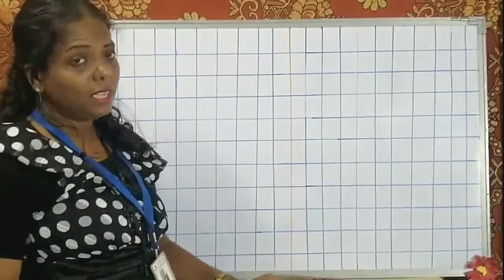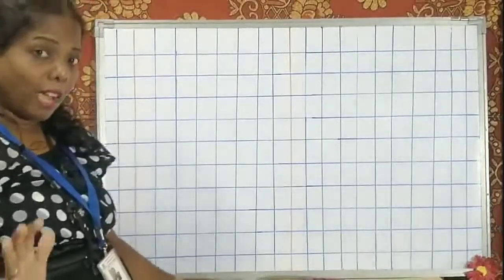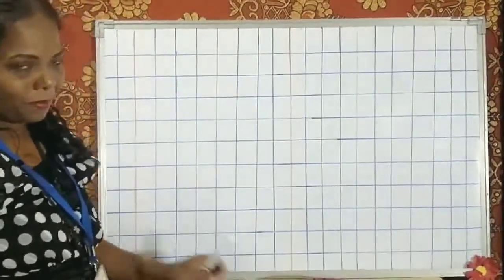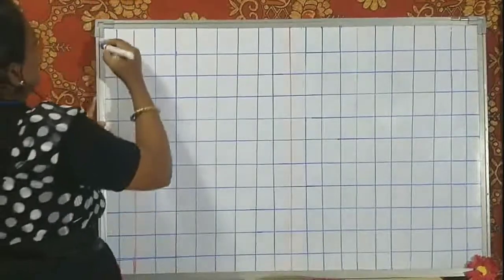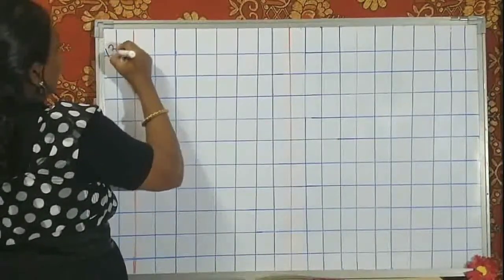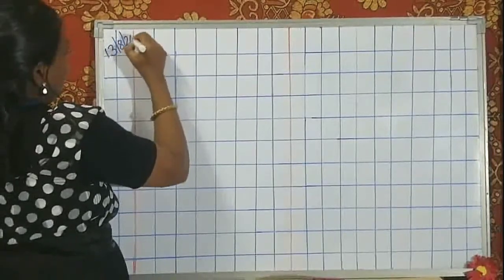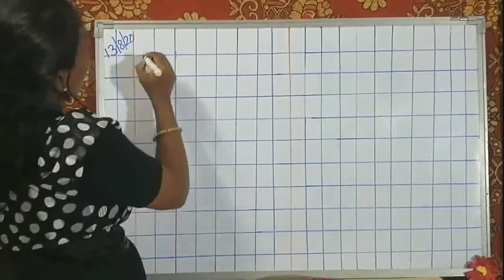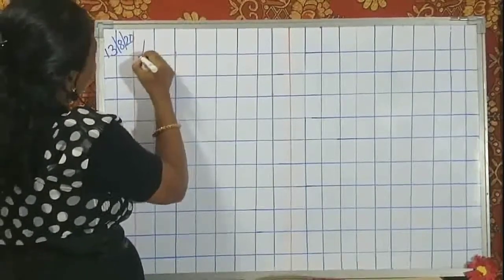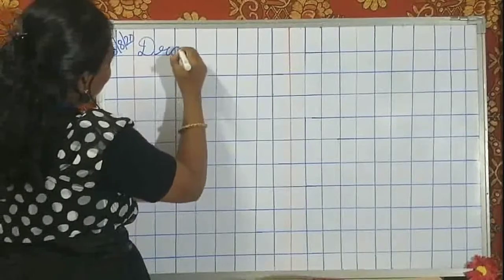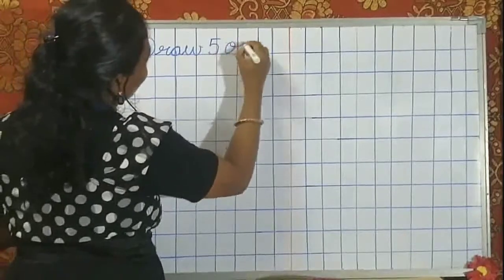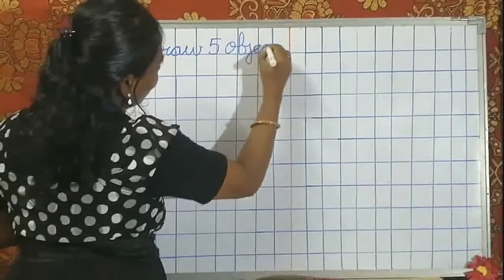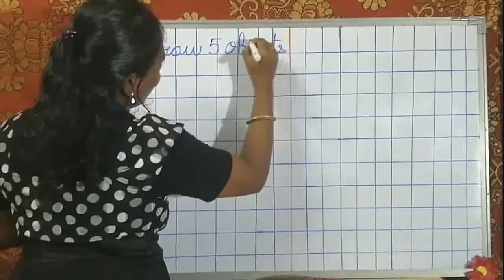Hello! Did you enjoy, children? Now children, teacher is going to teach you to draw 5 objects and write number 5. Draw 5 objects.